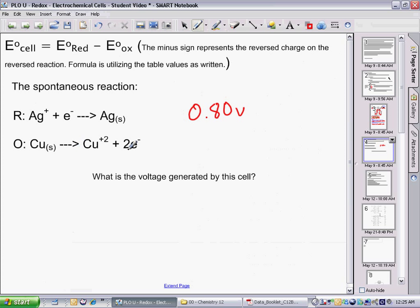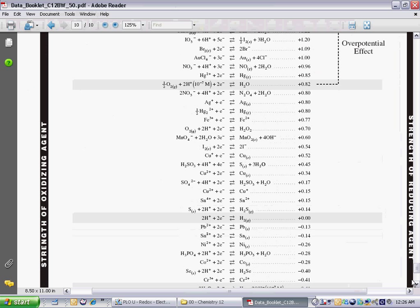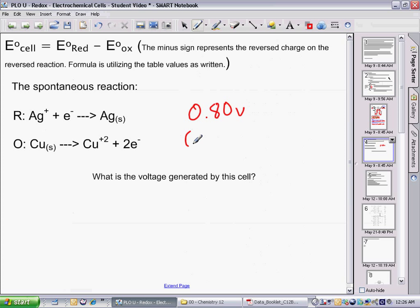Now the copper solid goes to copper +2 plus 2 electrons. Let's find that reaction. And that reaction is here: copper +2 plus 2 electrons go to copper solid. That's +0.34. Now this reaction, however, is reversed.